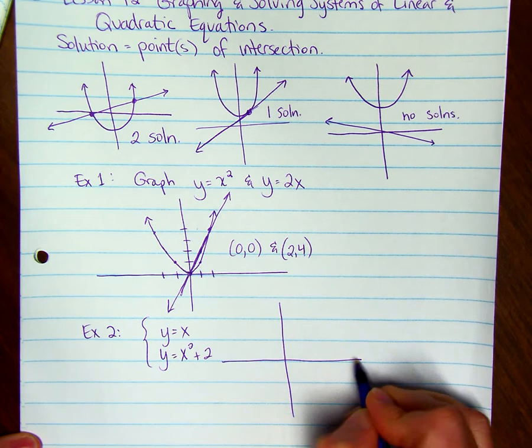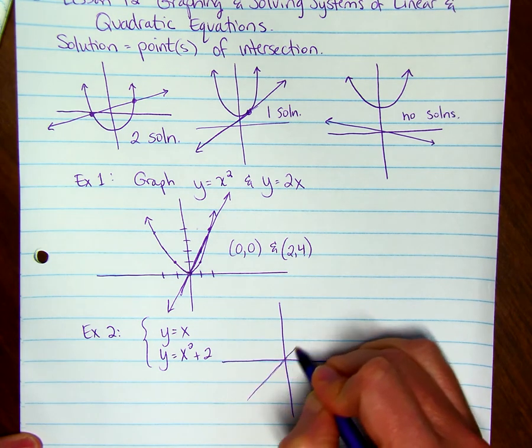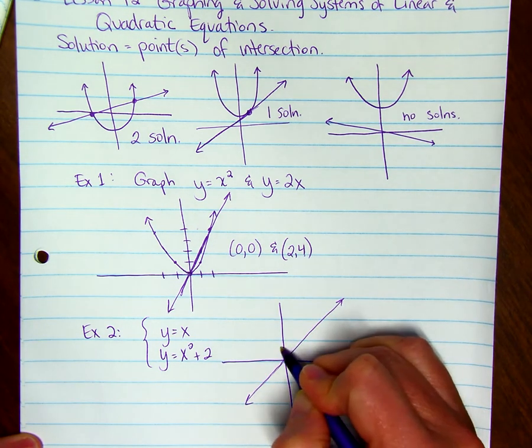So y = x goes through (0,0), (1,1), (2,2), (3,3), so on and so forth.